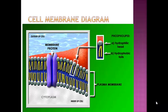Here's a diagram of what the cell membrane looks like. We talked about the phospholipid bilayer — bilayer meaning there are two layers of phospholipids. Here's one layer of phospholipids and here's the second layer. This is the inside of the cell and then the outside of the cell. The phospholipid has a phosphorus head which is hydrophilic — it likes water — so it points outwards towards the water.